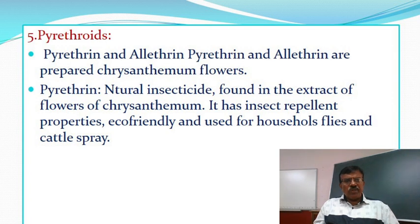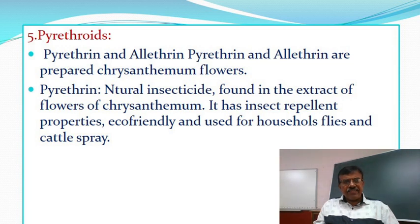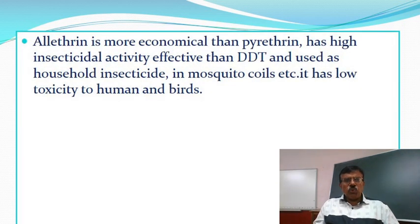Chrysanthemum Pyrethroids: Pyrethrin and Allethrin are prepared from chrysanthemum flowers. Pyrethrin is a natural insecticide found in the extract of flowers of chrysanthemum. It has insect repellent properties, is eco-friendly and used for households, flies and cattle spray. Allethrin is more economical than pyrethrin, has high insecticidal activity, is more effective than DDT and is used as a household insecticide in mosquito coils etc. It has low toxicity to humans and birds.